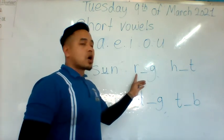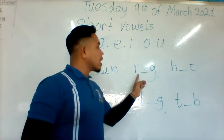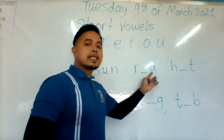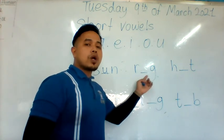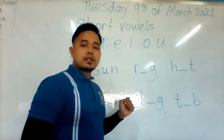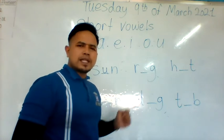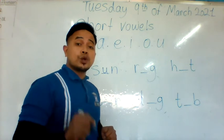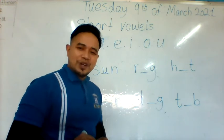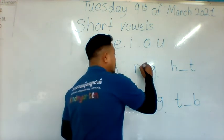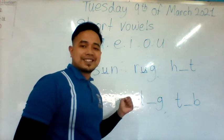Let's go to this one. R — G — RUG. RUG. So U — what makes the U sound? So if you say U, then you are correct. So U for RUG.